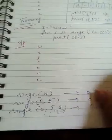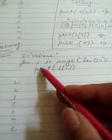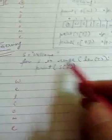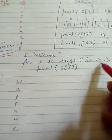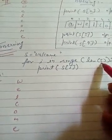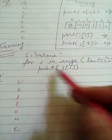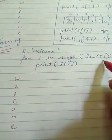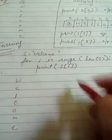Now applying the same method for string traversal: i's first value comes from range(len(s)). The length of s is 8, so the range is 0 to 7. First, i takes the value 0.